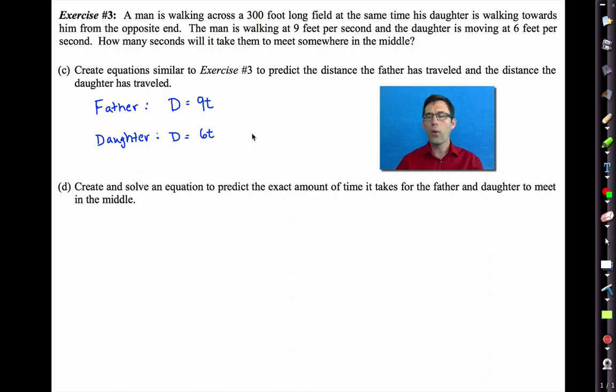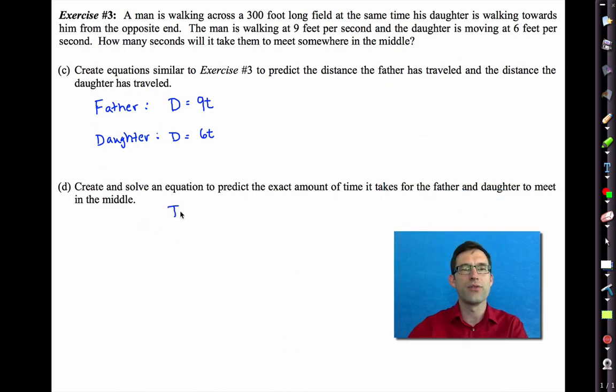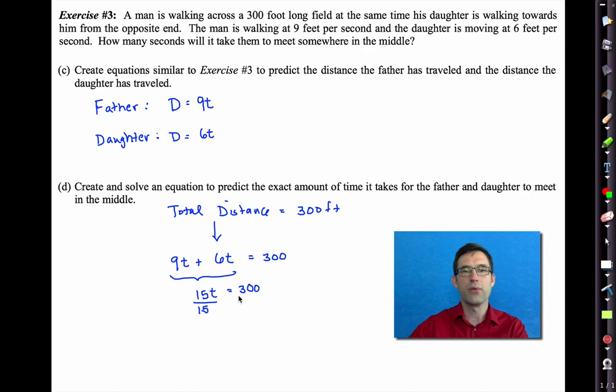All right. Let's go through it. Well, what we knew was that their total distance had to be equal to, the total distance must be equal to 300 feet. But the total distance is given by the father's distance, 9t, plus the daughter's distance, 6t. So when I add 9t to 6t, I have to get 300. If you remember a little bit from eighth grade math, 9t plus 6t, we can combine what are known as like terms to get 15t. That will equal 300. And then we can pretty easily solve that by dividing both sides by 15. And what we find is that it will take 20 seconds for them to meet in the middle.